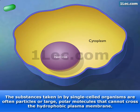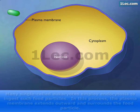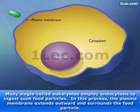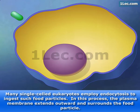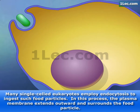The substances taken in by single-celled organisms are often particles or large polar molecules that cannot cross the hydrophobic plasma membrane. Many single-celled eukaryotes employ endocytosis to ingest such food particles. In this process, the plasma membrane extends outward and surrounds the food particle.